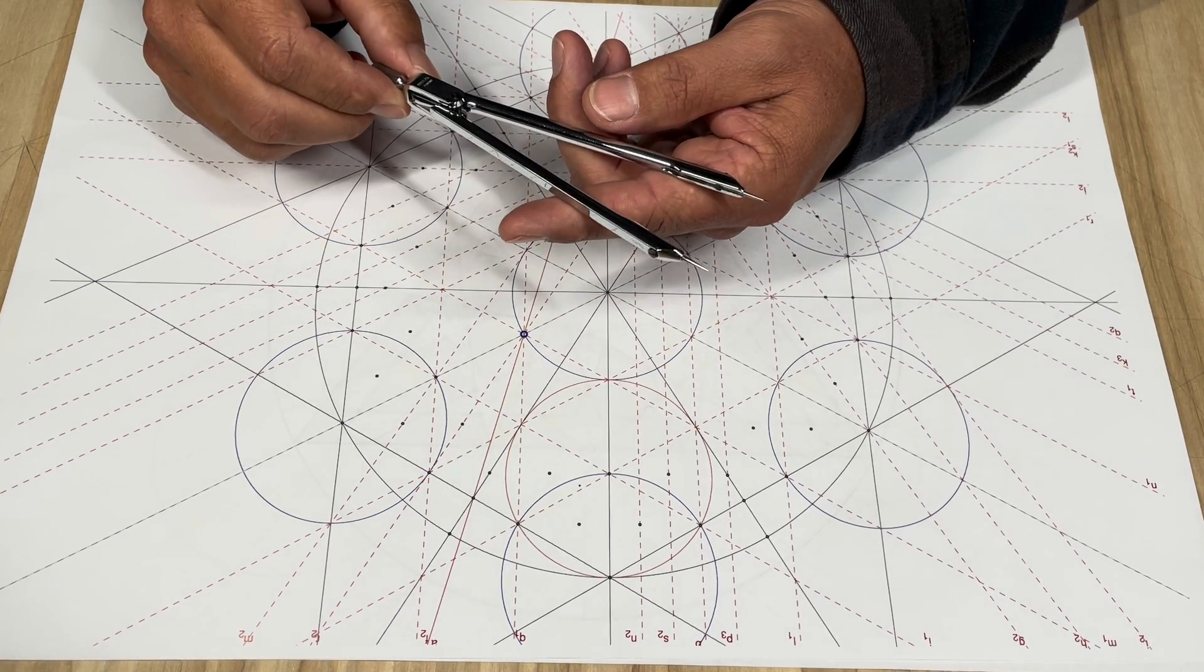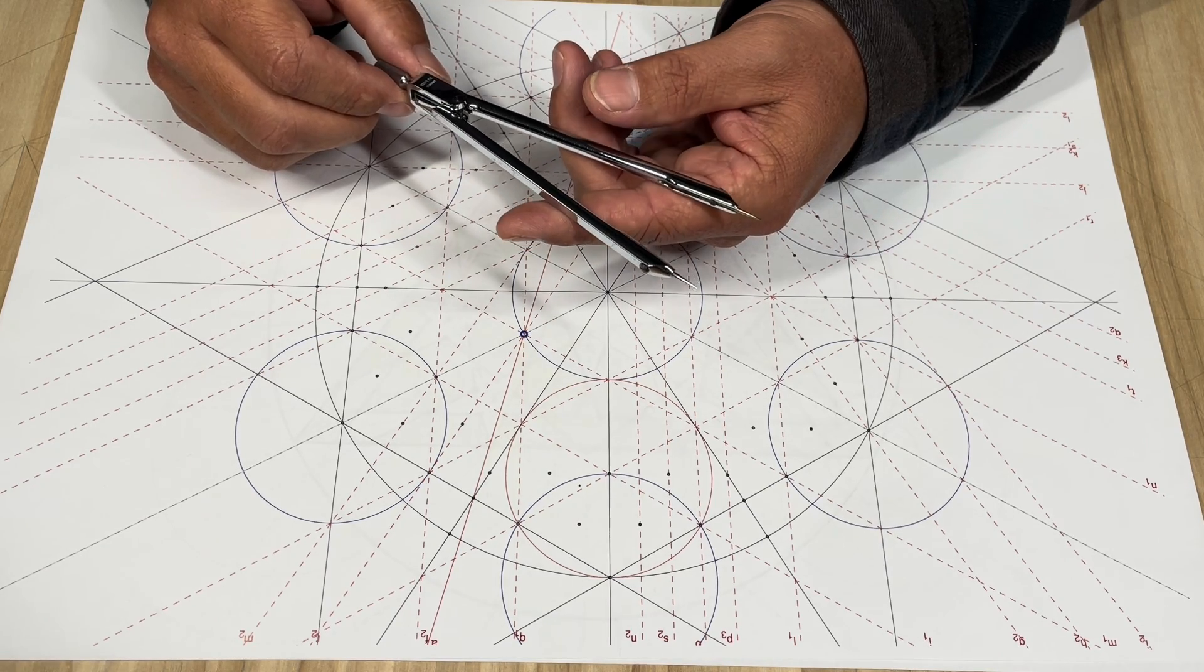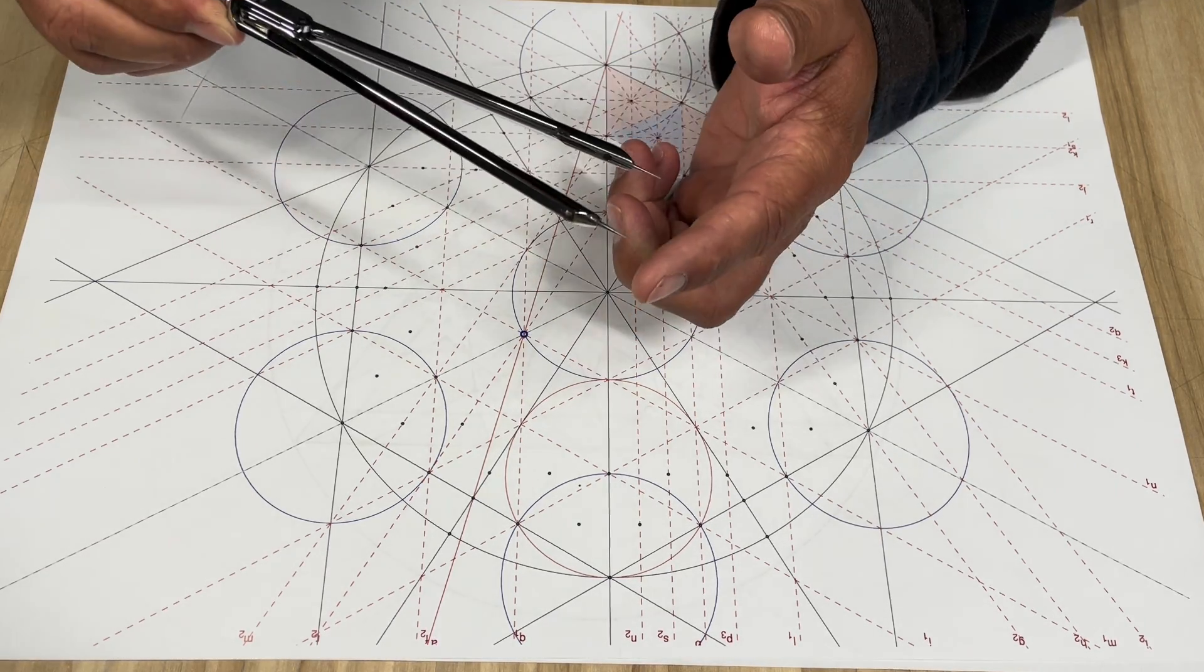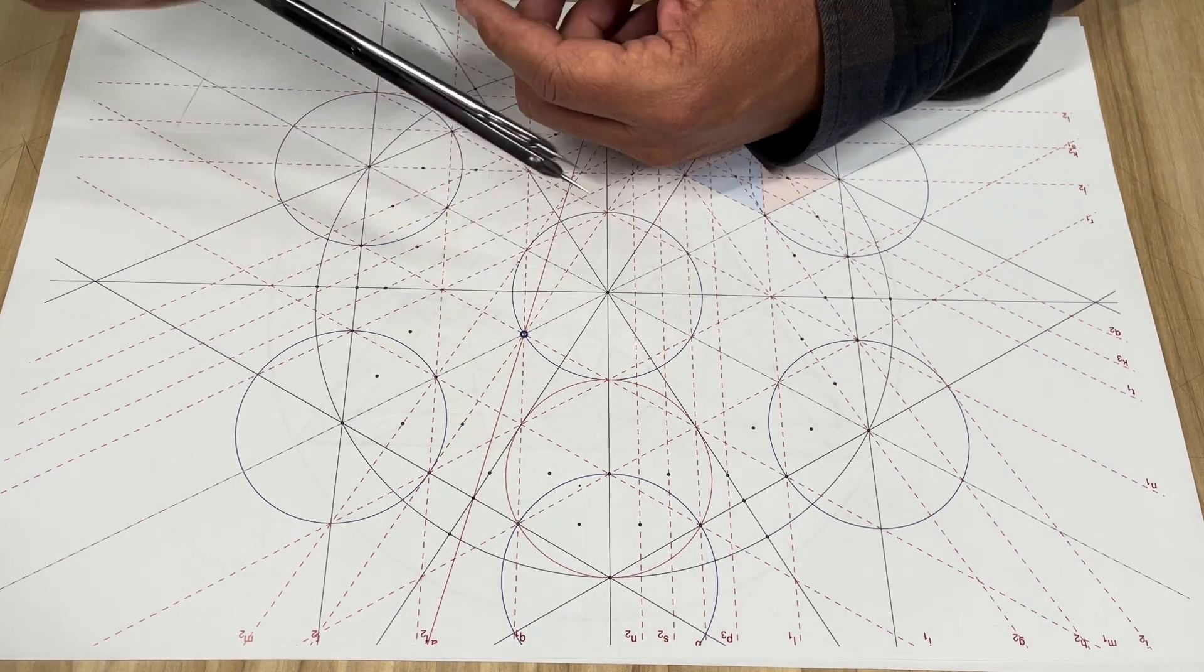So what is a divider? A divider is a measuring tool and can also be a marking tool by making holes with the point of the needle, and it's used for transferring measurements.